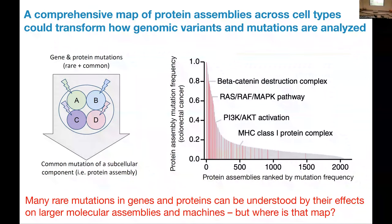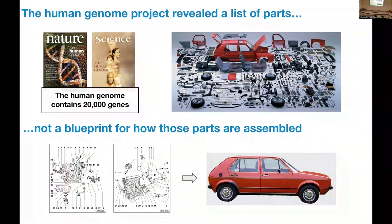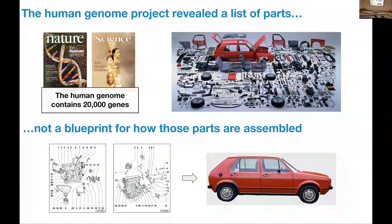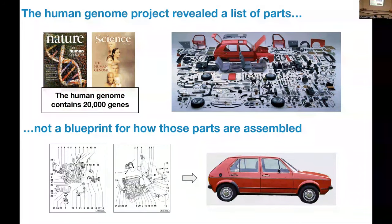Where is this map of cancer protein complexes and assemblies? That itself is an enormous challenge. The human genome has revealed essentially a list of parts — the genes and gene products, the proteins encoded by that genome — but not how those parts fit together. This is akin to taking a Mark I Volkswagen Golf and decomposing it into its component parts on the factory floor, but not having the assembly manual for how to put those parts together into the final car.